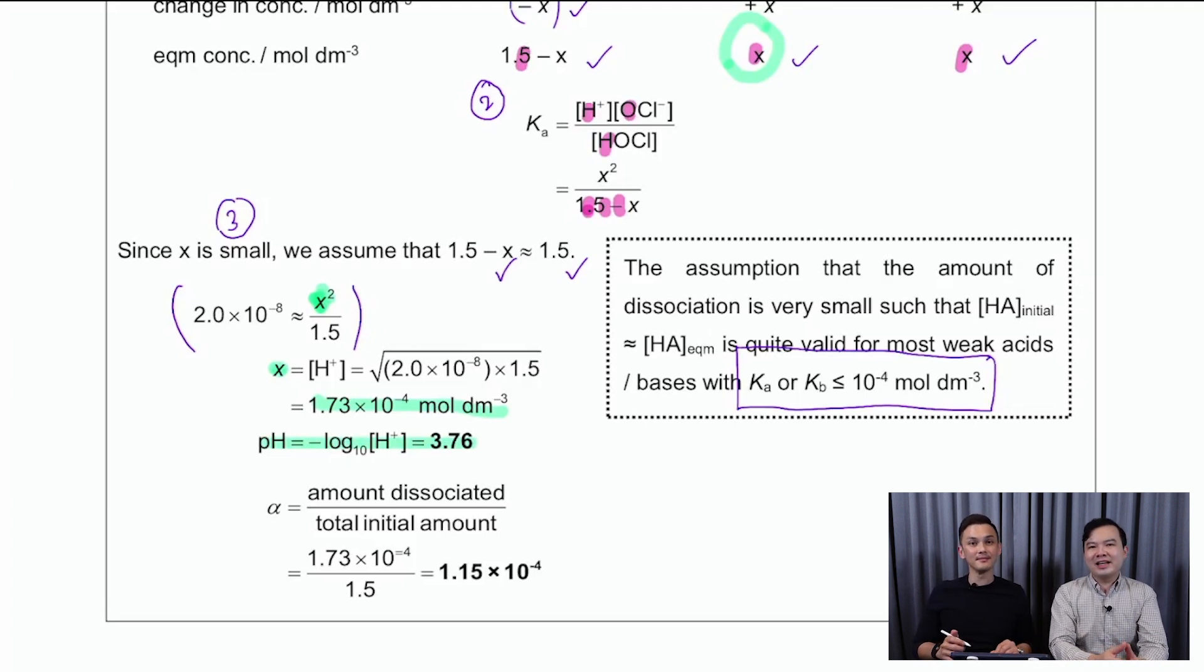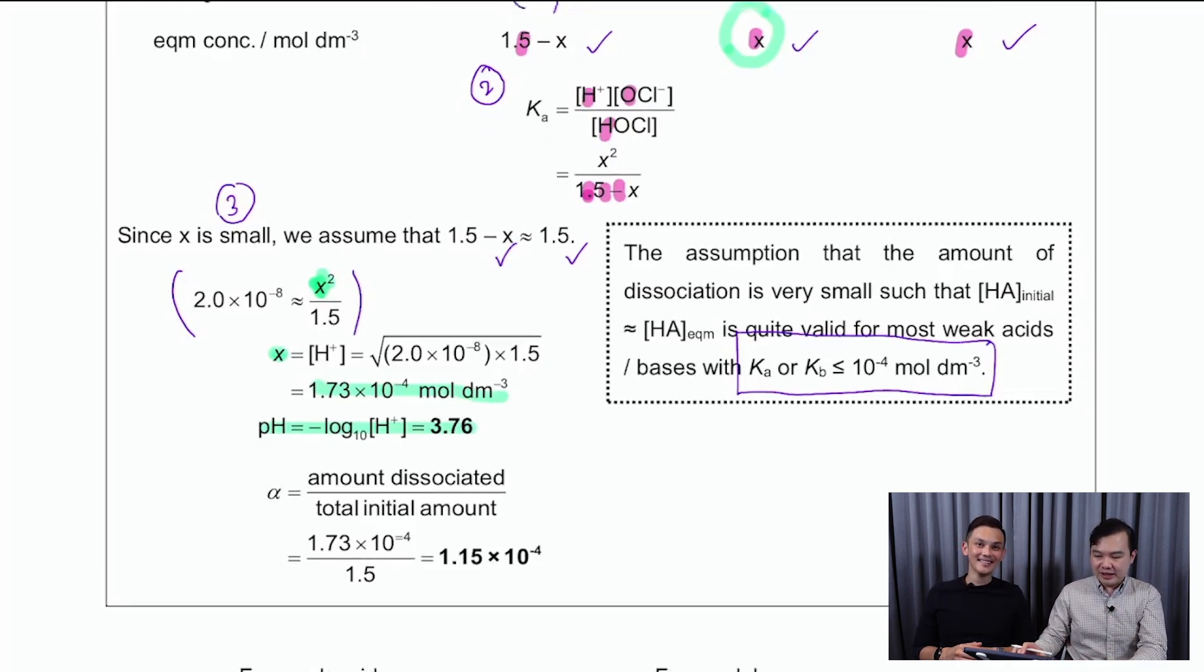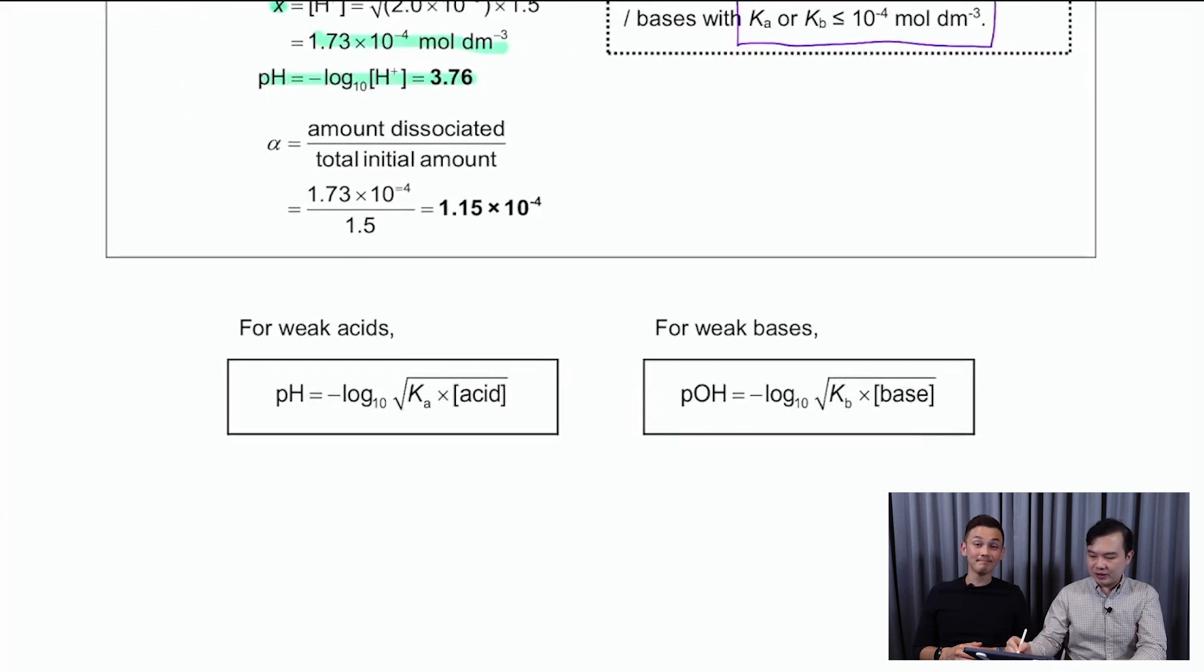In general, you realize that regardless whether we are doing a strong acid or weak acid, the formula is always the same. You always do negative log 10 of H+ concentration to find the pH. But of course, for weak acids, you have to go a little bit more to finish up the three steps. But honestly, William, I'm a very lazy person. So I don't think I'm going to use all the three steps. Alternatively, you could have used the formula that's at the bottom, which is simply a recollection of all the three steps that we have done earlier. So hopefully you have gotten a view of how to calculate pH for the different types of solutions. We'll see you for the next video.